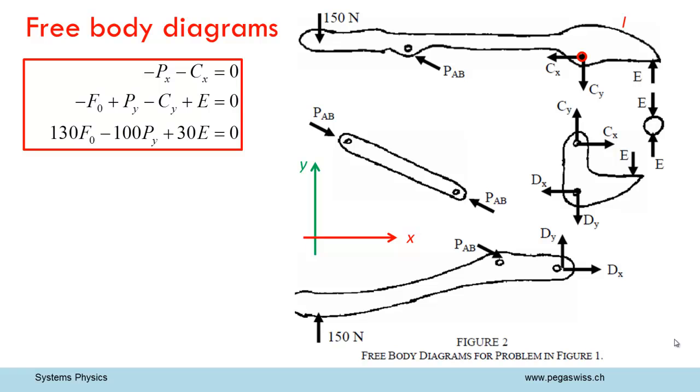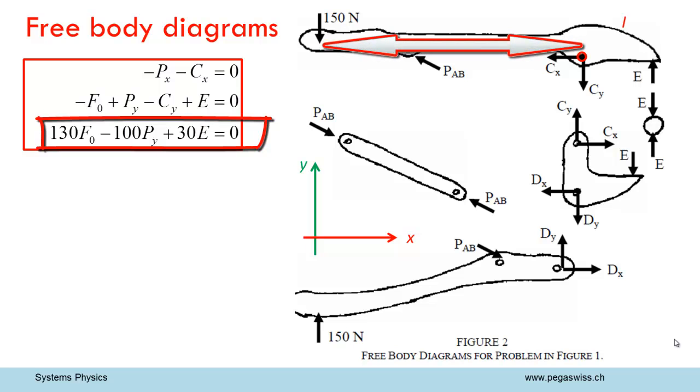The third equation describes the equilibrium condition in terms of rotation. To formulate this condition, I choose the joint at C as my axis of rotation. The product of the given force F0 and the 130 mm lever arm it acts upon results in a positive torque. The y component of force P generates a negative torque. According to the lever rule, the corresponding value equals force times a lever arm of 100 mm. The force at point E generates a positive torque with a lever arm of 30 mm.